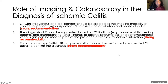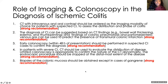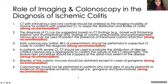Clinically I've seen deferring colonoscopy and treating conservatively, but according to the ACG, we should be getting colonoscopies mostly to rule out other etiologies. In patients with severe ischemic colitis, CT should be used to evaluate the distribution of disease and a limited colonoscopy is appropriate to confirm the nature of the CT abnormality — similar to my case, we just did a flex sig and stopped at the distal-most extent of disease. Biopsies should be obtained except in cases of gangrene, and colonoscopy should not be performed if patients have signs of acute peritonitis or irreversible ischemic changes such as gangrene or pneumatosis.